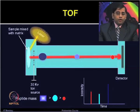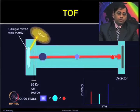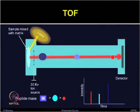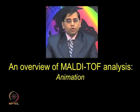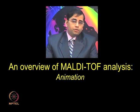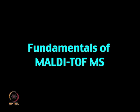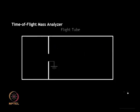For example, with three ions shown in dark blue, light blue, and red, the small red ion will show the first peak, followed by the blue ion and then the dark blue one. After discussing these basic concepts of MALDI and TOF, here is an overview of the entire MALDI-TOF experiment through an animation — Fundamentals of MALDI-TOF MS. The time of flight analyzer resolves ions produced by the ionization source on the basis of their mass to charge ratio.